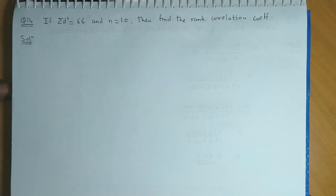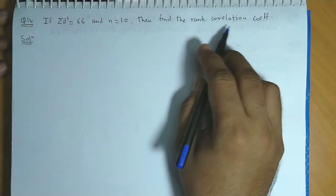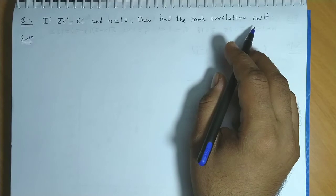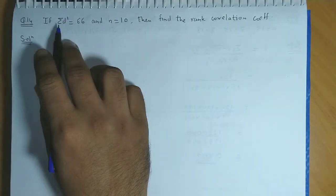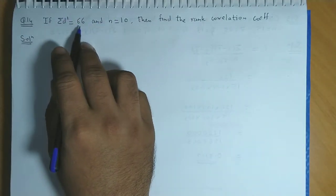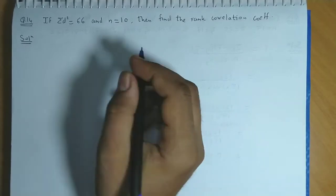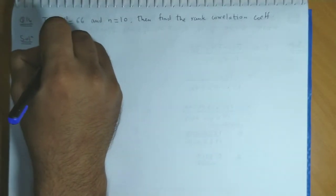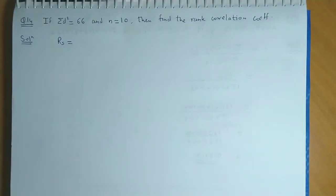Now, let us solve one more example. This is related to rank correlation coefficient. Here the values given are summation d square is 66, n is equal to 10. We need to find the value of rs, Spearman's rank correlation coefficient.